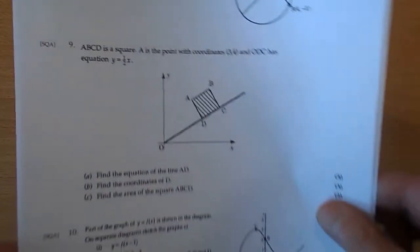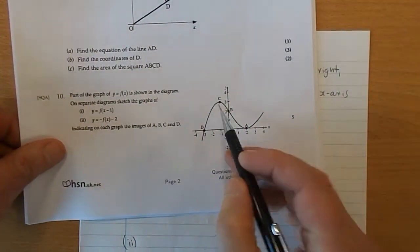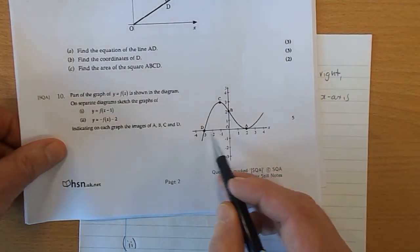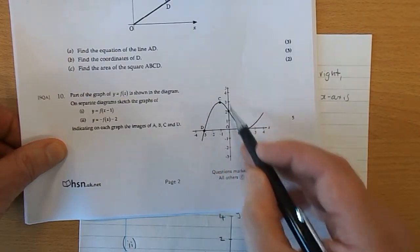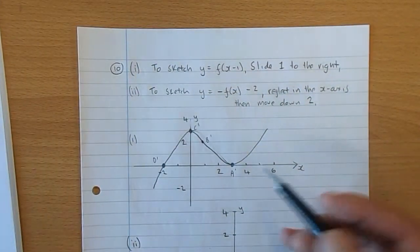Moving it 1 unit to the right, there's the original. All these points go 1 to the right. And then you draw the related function.